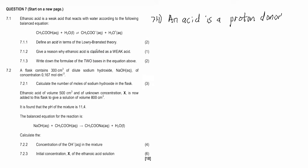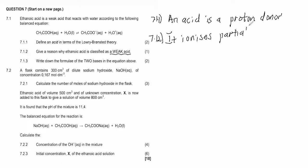Question 7.1.2 says give a reason why ethanoic acid is classified as a weak acid. The reason is that it ionizes partially in water.